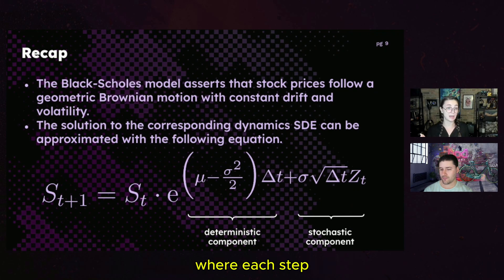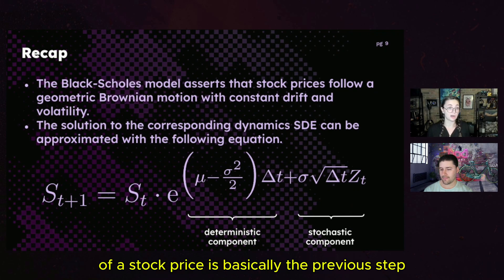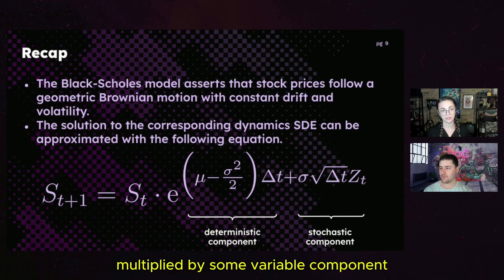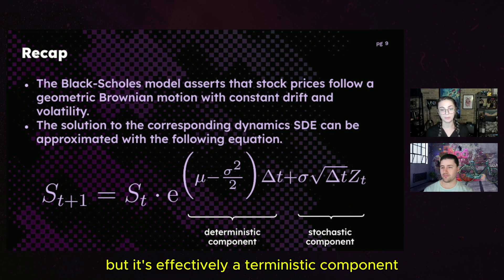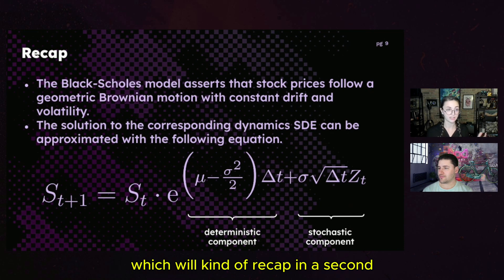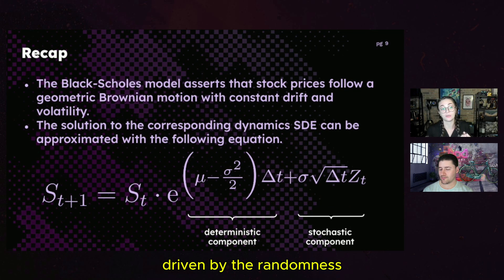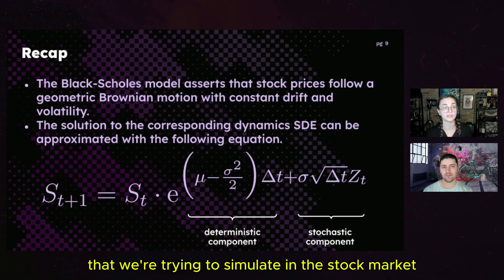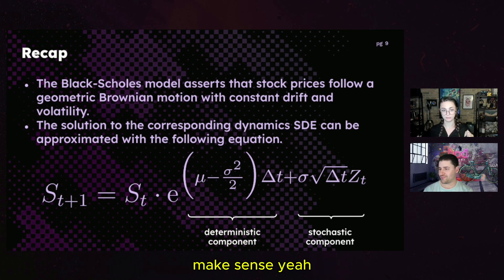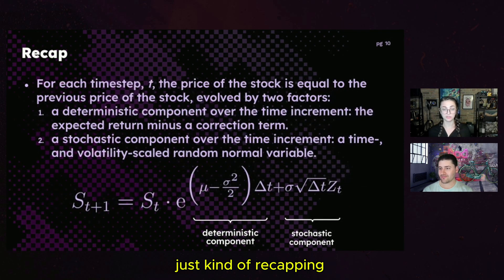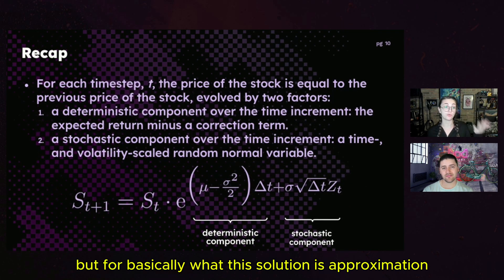Each step of a stock price is basically the previous step multiplied by some variable component — effectively a deterministic component and then a stochastic component, which is driven by the randomness we're trying to simulate in the stock market.